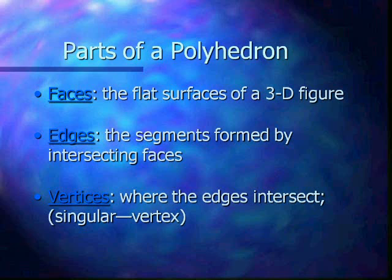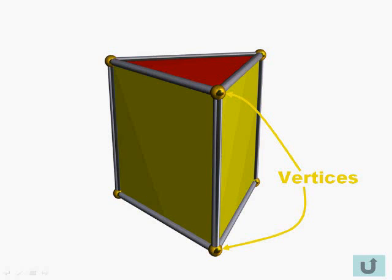Vertices, where the edges intersect. Singular form is vertex, so one vertex, more than one vertices. Seen here with the little golden balls where you have three or more edges meeting.